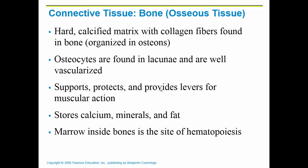The next type is bone, or osseous tissue. Osseous tissue is hard and calcified — that is where we store all of our calcium. It is organized into functional units called osteons. It is made up of osteocytes, which are bone cells, also found in a lacunae. The key difference between cartilage and bone is that bone is vascularized — it has a good blood supply — so when you break a bone, it is much easier to repair. Bone supports, protects, and provides levers for muscular action. We also store calcium, minerals, and some fat in bone, which we will cover more during the skeletal system.